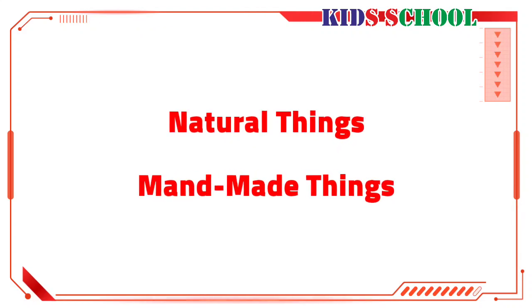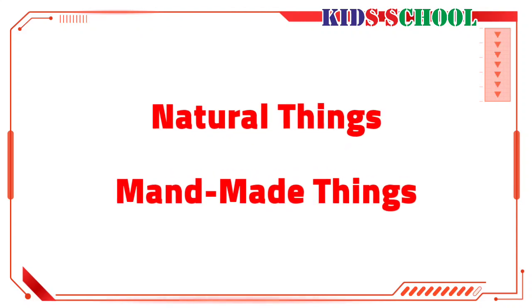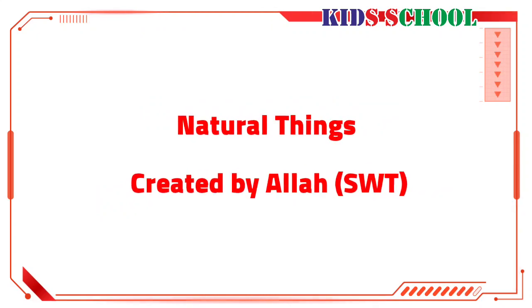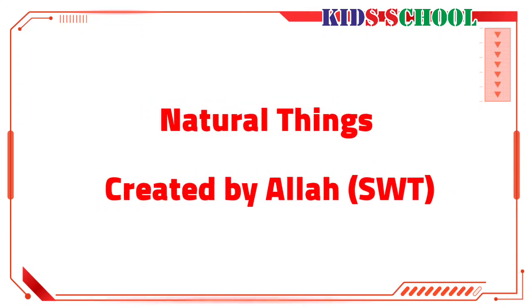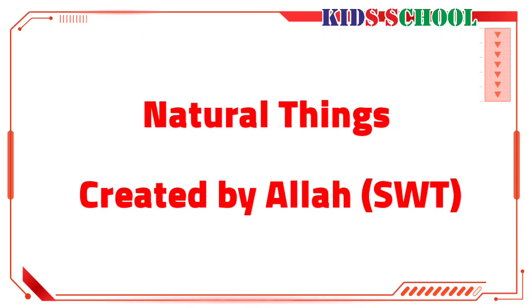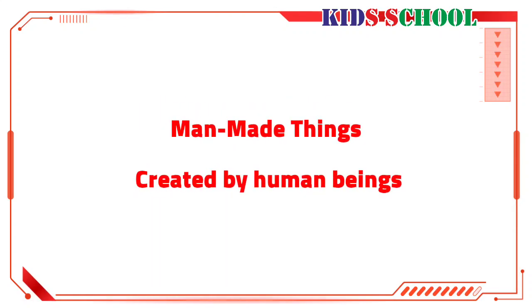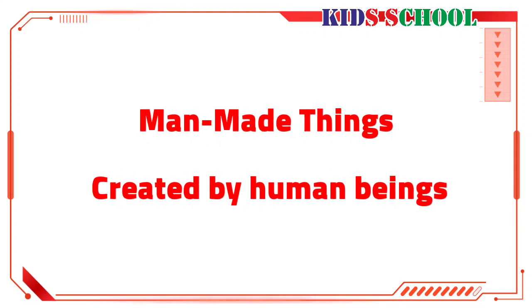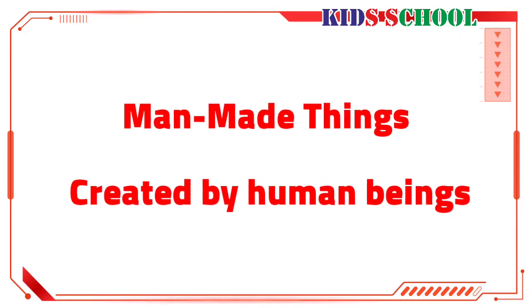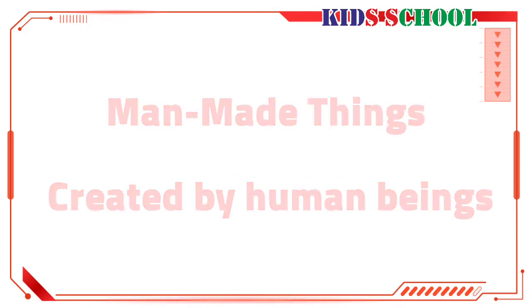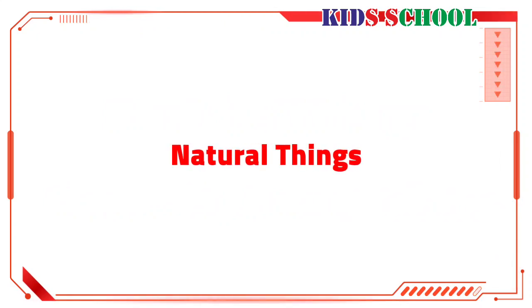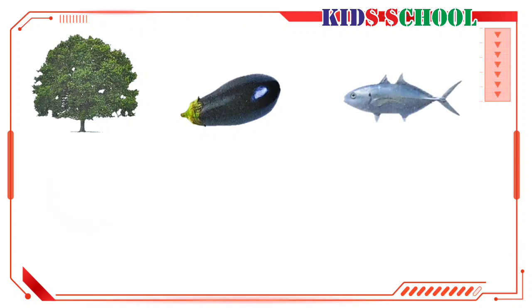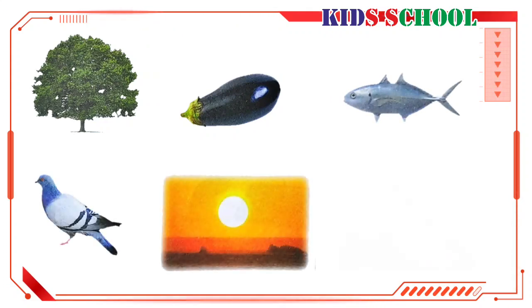Dear students, there are two types of things: natural things and man-made things. Natural things are the things created by Allah Subhanahu Wa Ta'ala, and man-made things are the things created by human beings with the help of Allah Subhanahu Wa Ta'ala. Now you can see: tree, brinjal, fish, bird, sun, mountain —